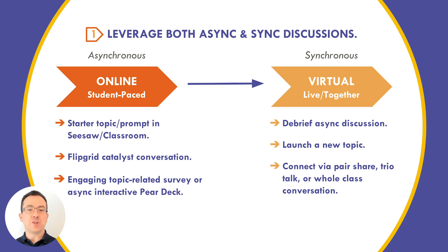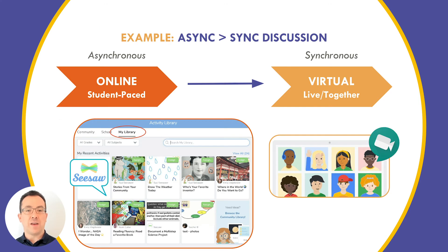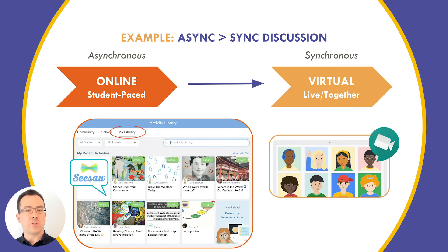Just because you're merging an asynchronous approach with a synchronous approach does not mean that one has to come before the other. An example of asynchronous coming first might be you proposing a debatable topic or asking a loaded question on a platform like Google Classroom or Seesaw, or giving a survey to students that gets them thinking. Then in the live class session, they engage in a whole class discussion, pair and share, or trio talk. Afterwards, you might ask them to go back to the asynchronous platform and reflect on what they've learned having met with their peers.